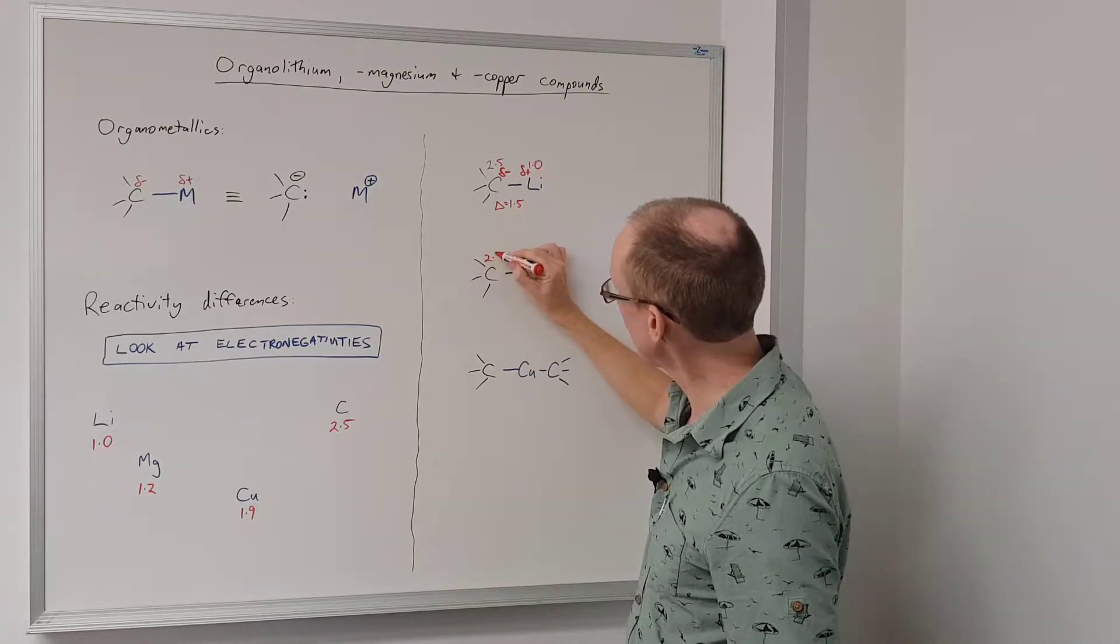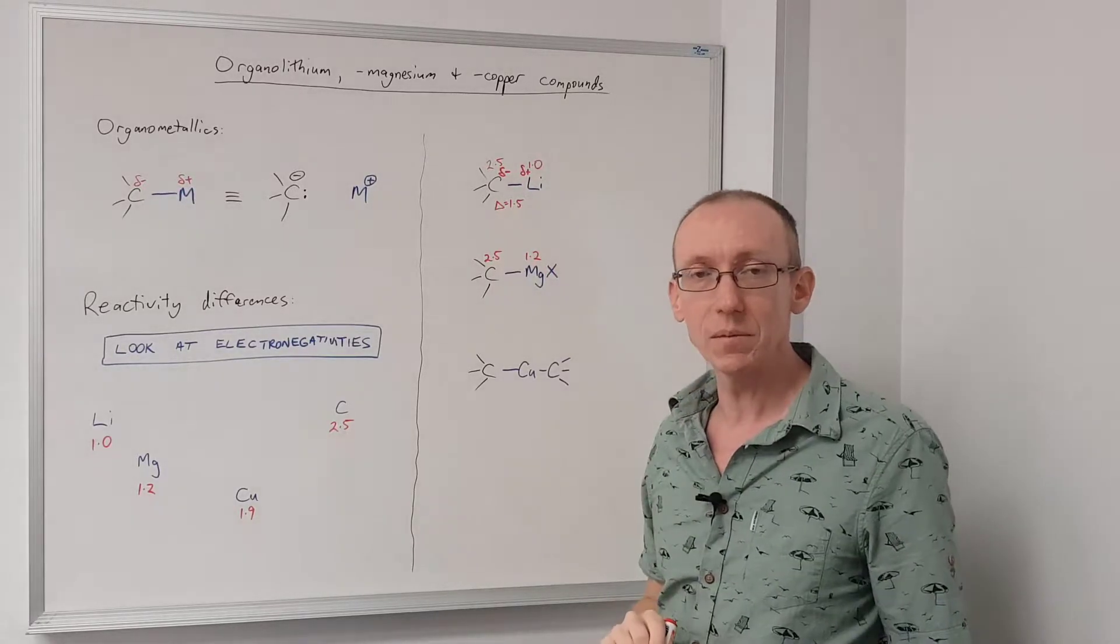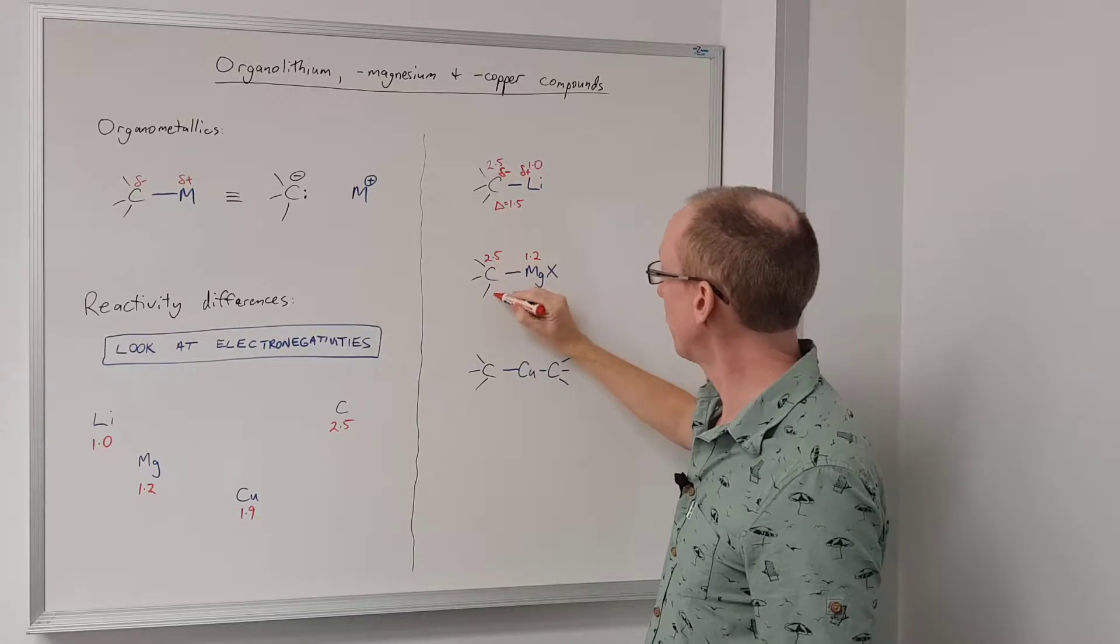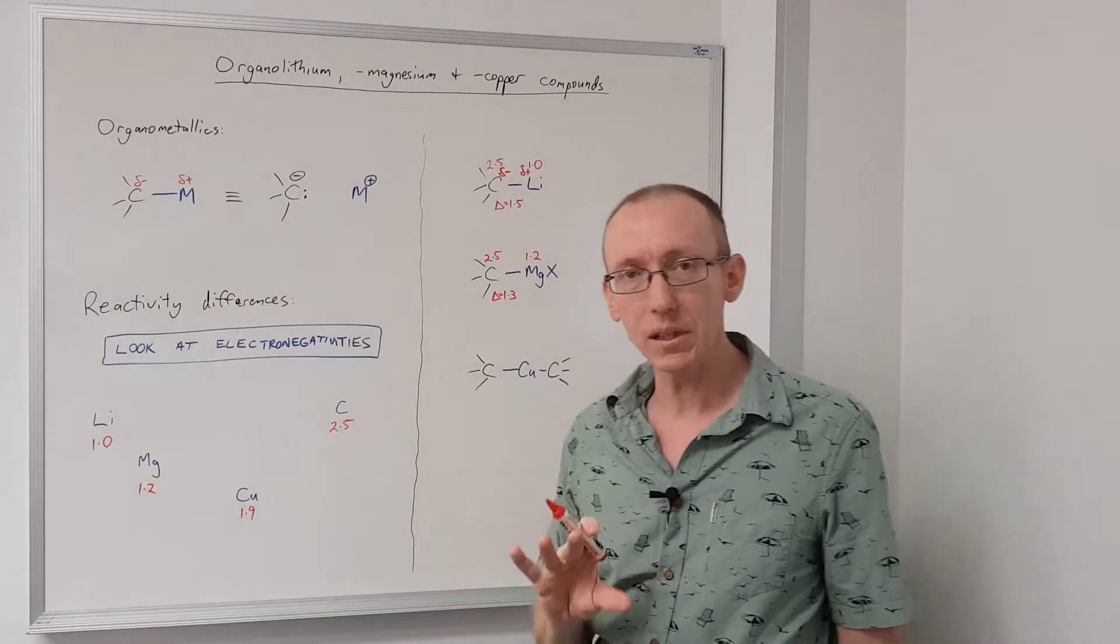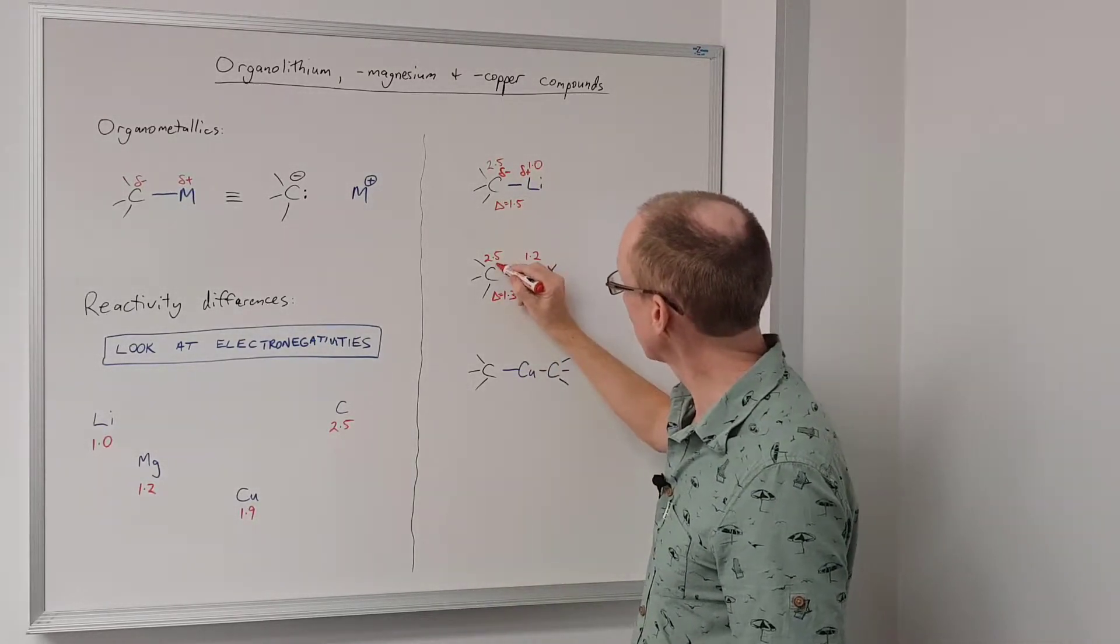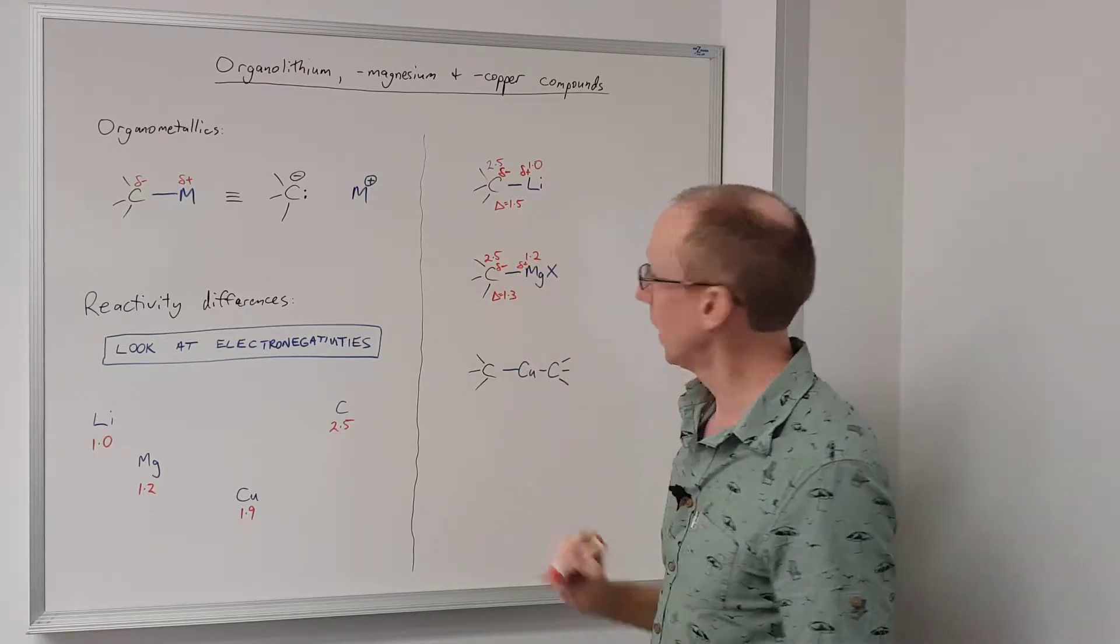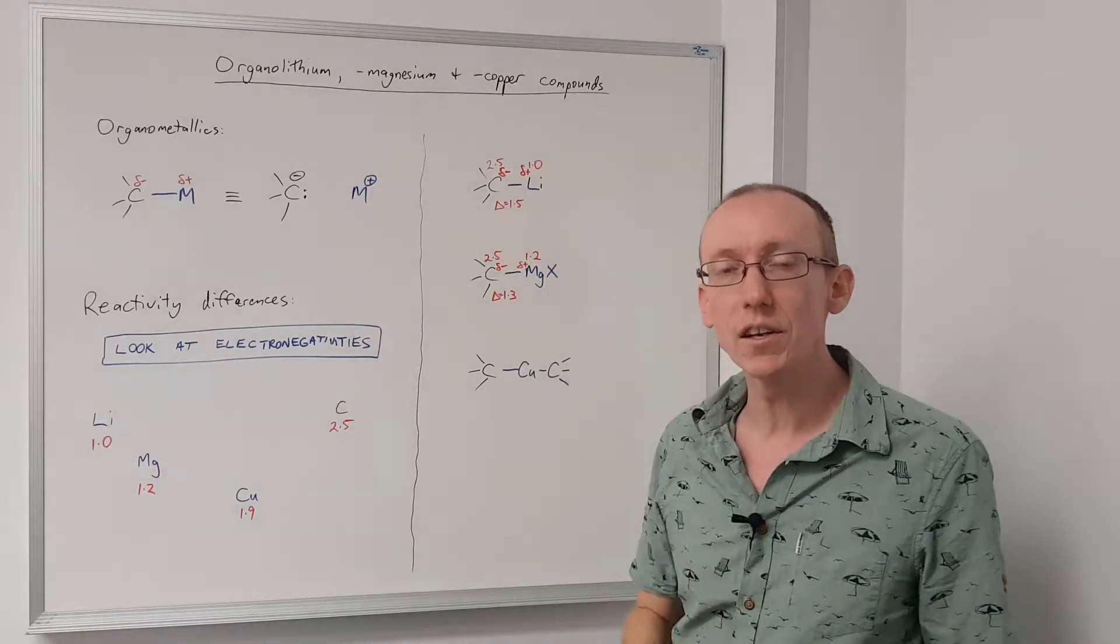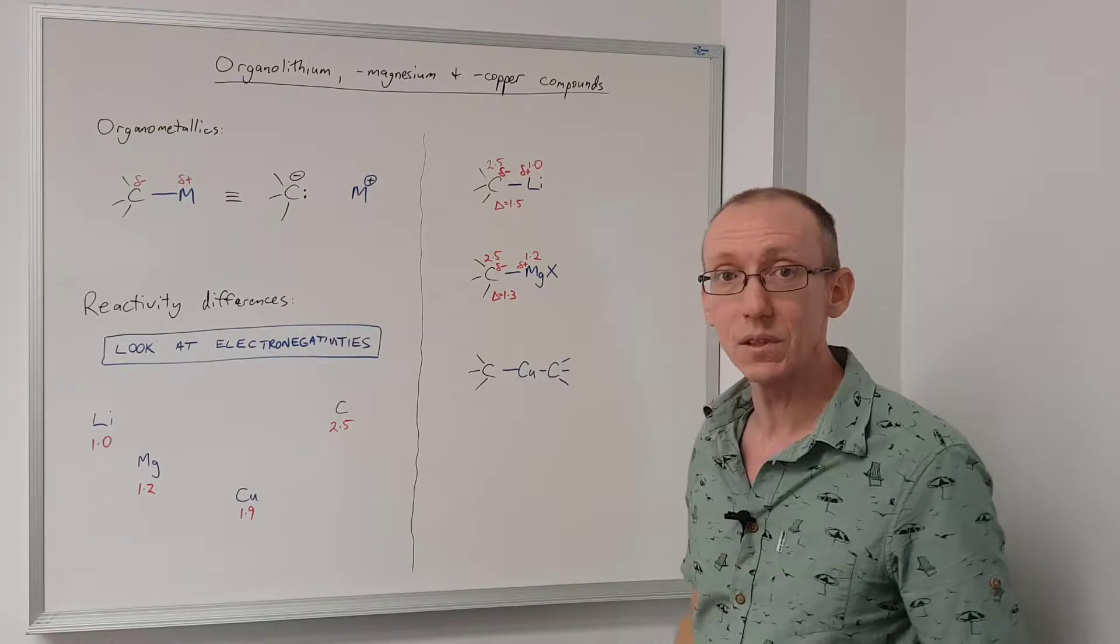So carbon is not going to change, 2.5 versus 1.2 for magnesium in a Grignard reagent. This is only a difference of 1.3. So it's a little bit less reactive than the organolithium. So we'll give it slightly less prominent partial charges. And so that tells us the Grignard reagents are likely to be slightly less reactive than organolithiums in general.